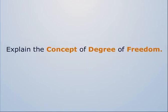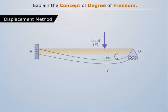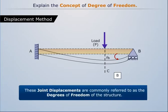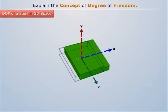Explain the concept of degree of freedom. In the displacement method of analysis, joint displacements are the primary unknowns. These joint displacements are commonly referred to as the degrees of freedom of the structure.